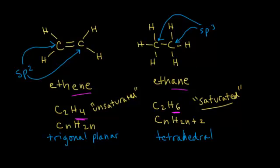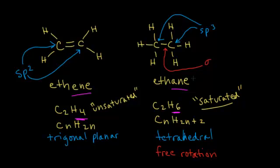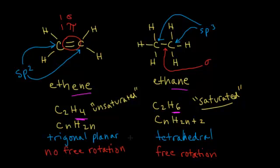In ethane, all bonds are single bonds — they're all sigma bonds, and sigma bonds allow free rotation. So there is free rotation between the two carbon atoms in ethane, which gives rise to several different conformations, as we saw in an earlier video. In the double bond of ethene, one bond is a sigma bond and the other is a pi bond. The pi bond helps stabilize the bond and prevents free rotation. So double bonds have no free rotation, while single bonds do.